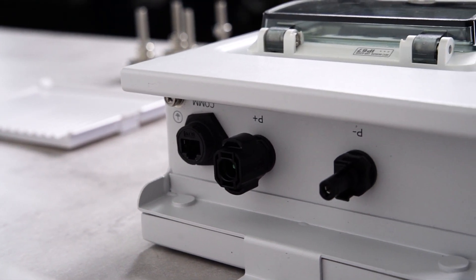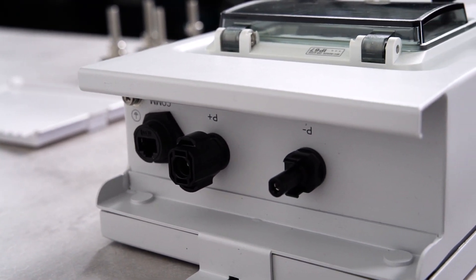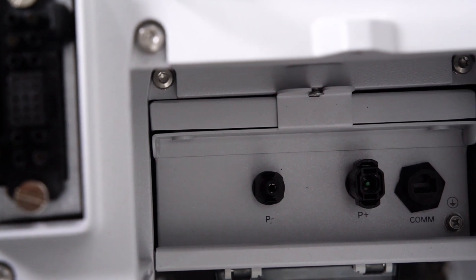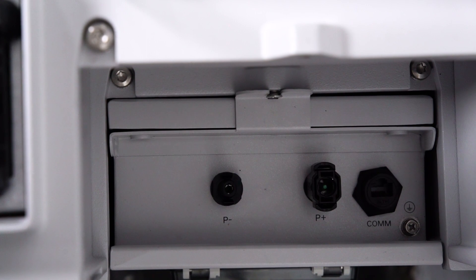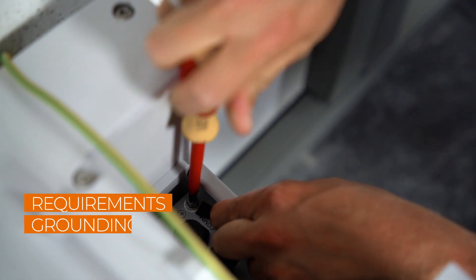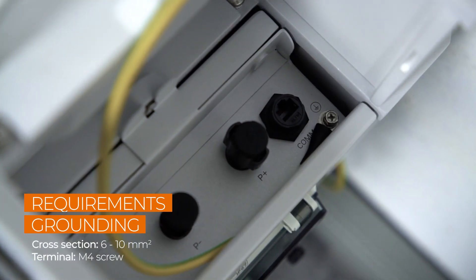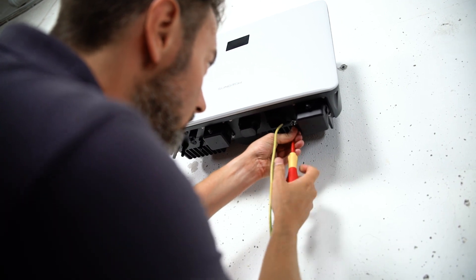The battery has four connectors: Grounding, P+, P-, and one terminal for communication with the hybrid inverter. Let's start with the grounding. Fix it on the battery side and connect it to the ground at the bottom of the inverter.